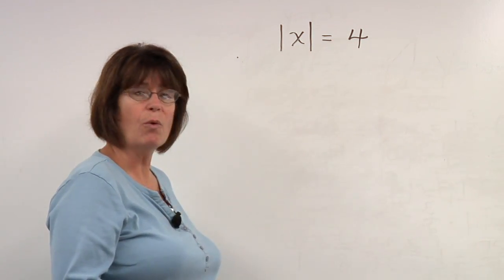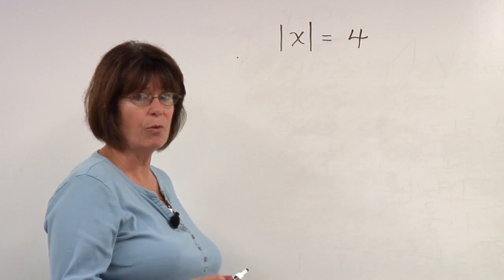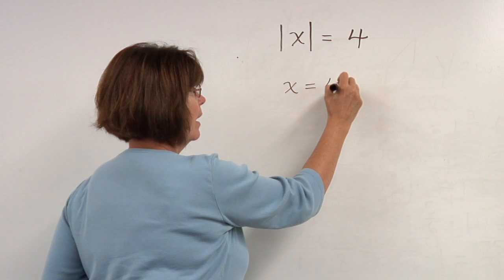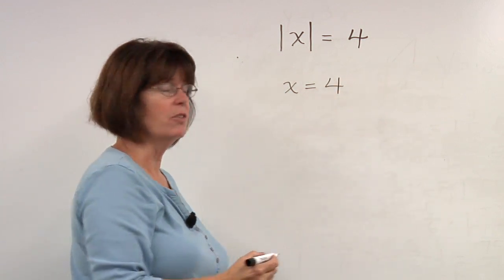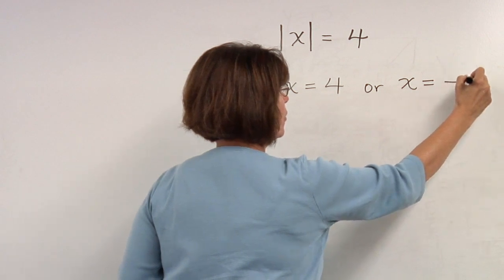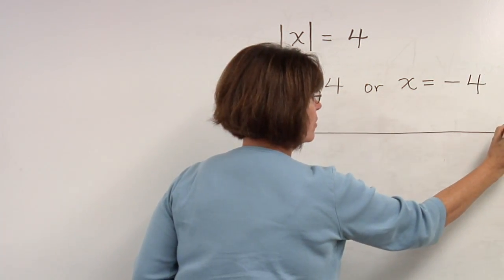Because both positive 4 and negative 4 are 4 units from zero, x equals 4 is a solution to this equation. X equals negative 4 is also a solution to the equation.